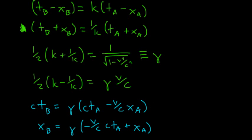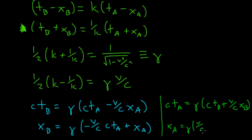If I change to the coordinates for A, I would get, if I want to do the same thing but solve for the values in A, I would get CTA equals gamma CTB plus V over C XB. Here we get XA equals gamma V over C CTB plus XB.